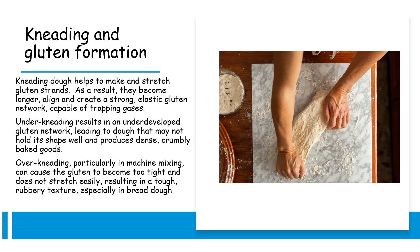Over-kneading, particularly in a machine, can cause the gluten to become too tight and unable to stretch easily, resulting in a tough, rubbery texture, especially in bread dough.